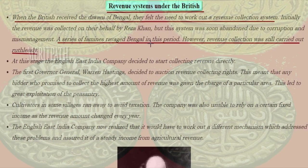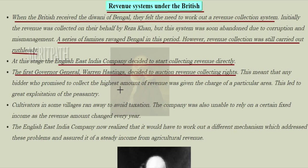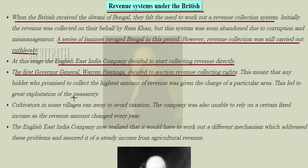However, revenue collection was still being carried out very ruthlessly. At this stage, the East India Company decided to start collecting revenue directly. The first Governor-General, Warren Hastings, decided to auction the revenue collecting rights. This meant that any bidder who promised to collect the highest amount of revenue was given the charge of a particular area, which led to great exploitation of the peasantry.